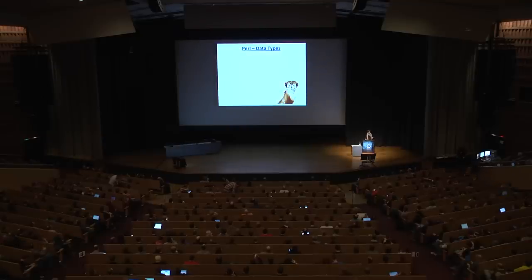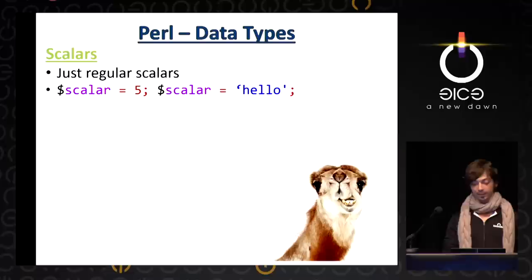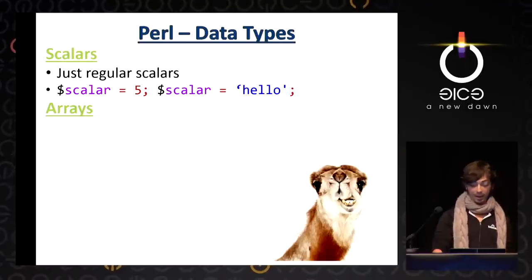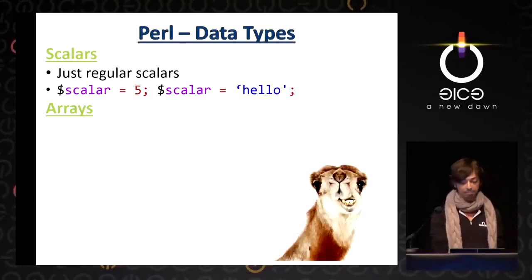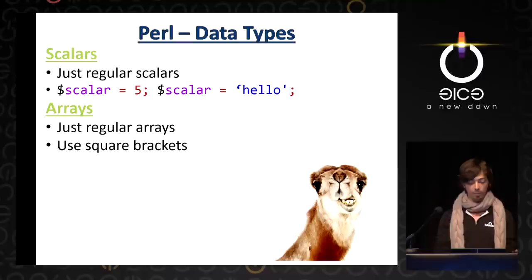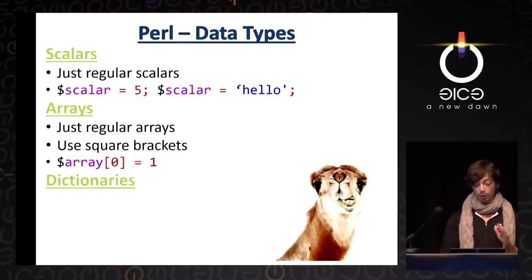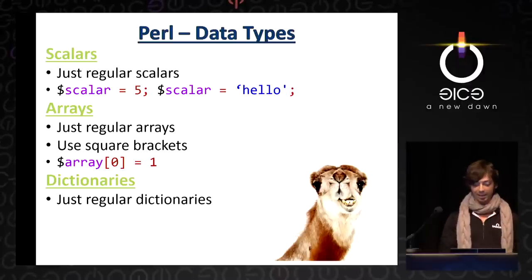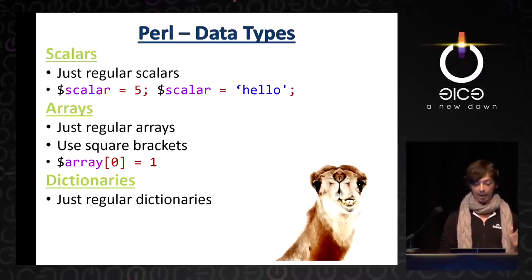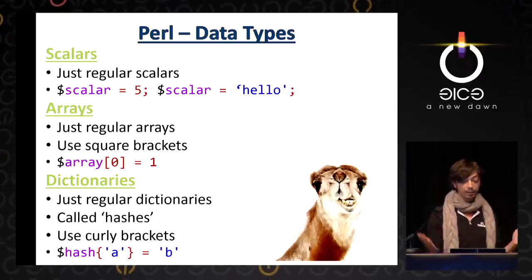Let's talk about Perl data types. First, we had scalars — just regular scalars: ints, strings, floats, etc. They even look like scalars using this syntax. Then we had arrays — just regular arrays, using square brackets. And finally, we had dictionaries. In Perl, they're called hashes. They use curly brackets and look like this.